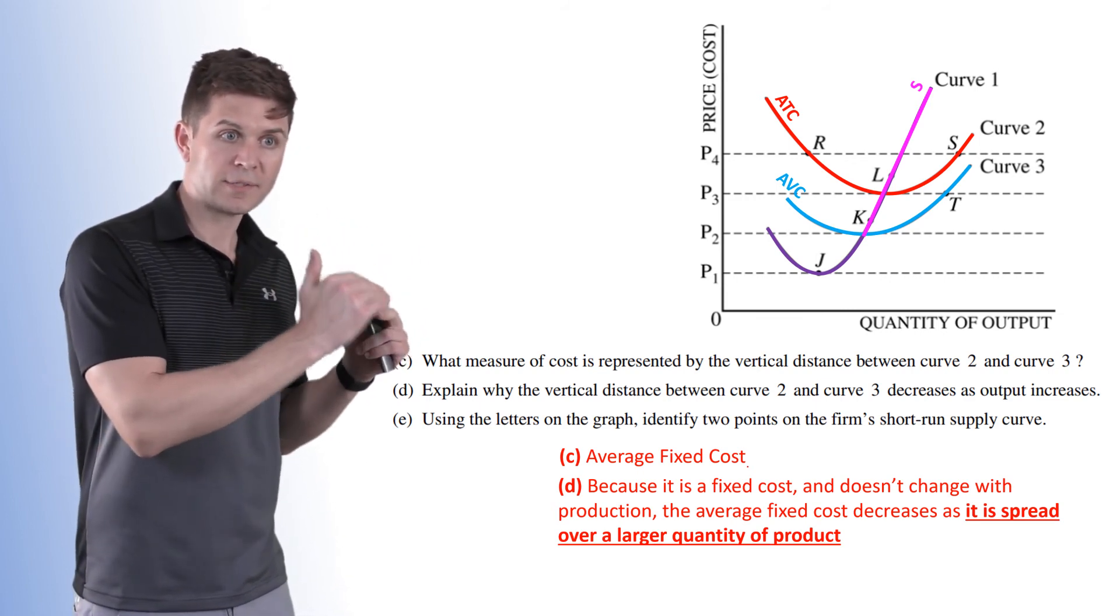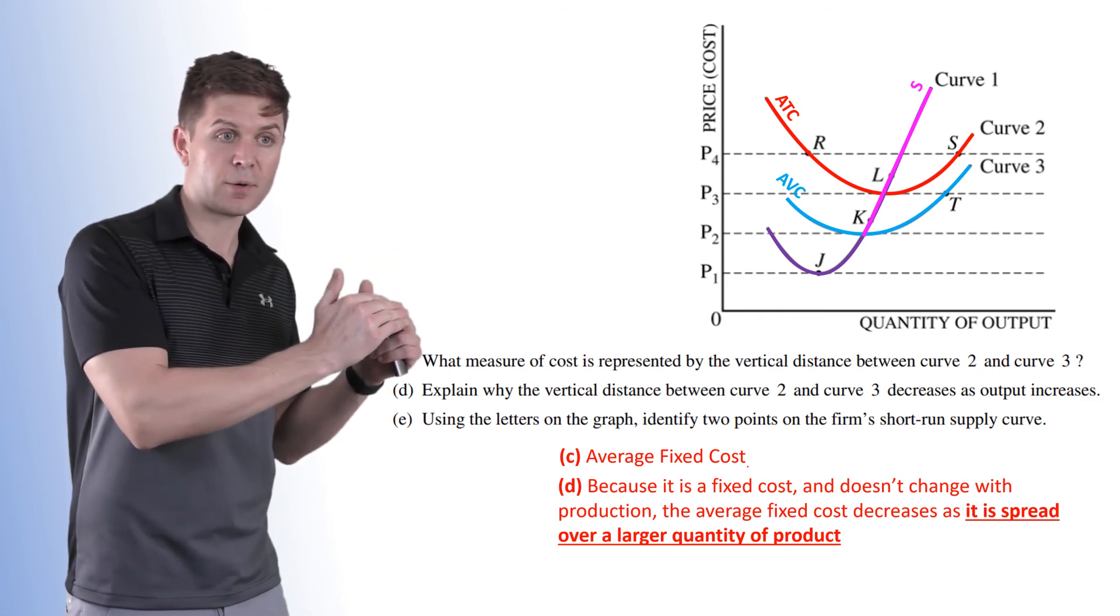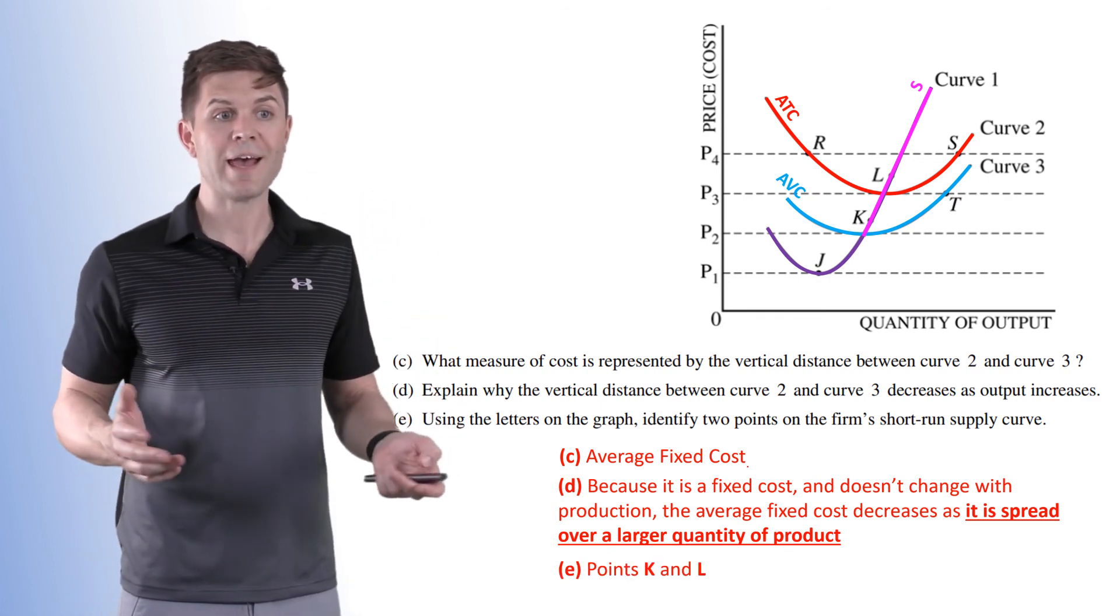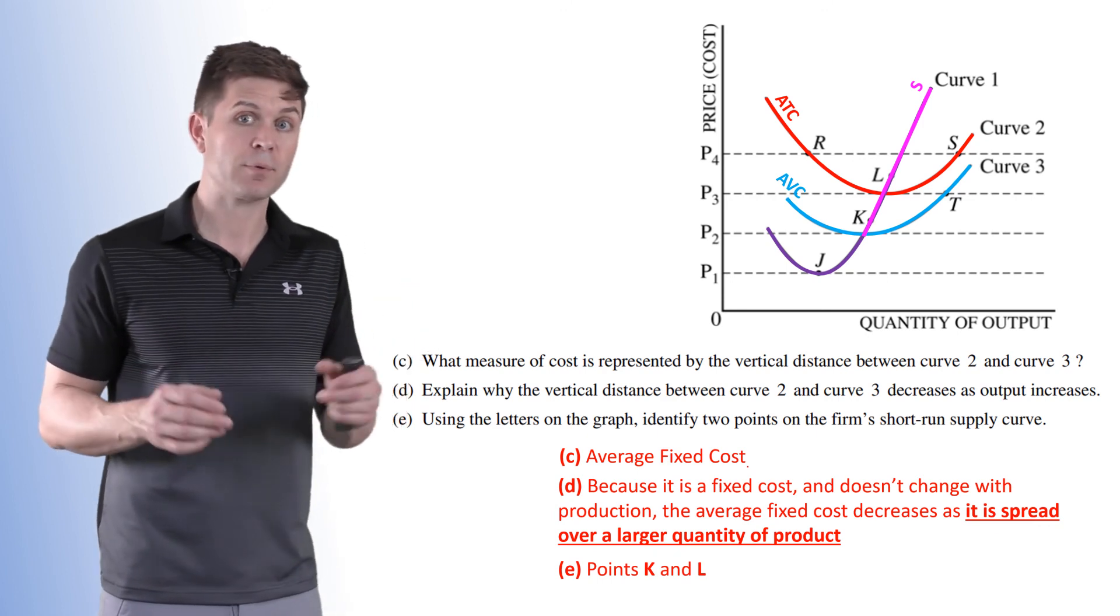a firm will continue producing as long as it hits or exceeds average variable cost. So any point at the average variable cost and above is going to count. So points L and K both fall on that particular curve.